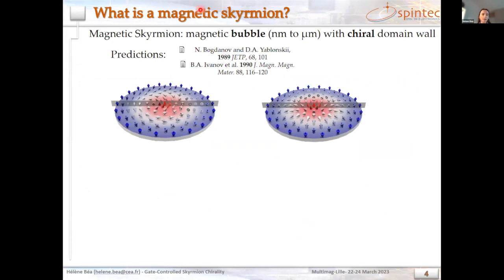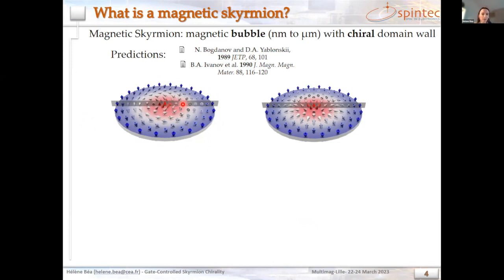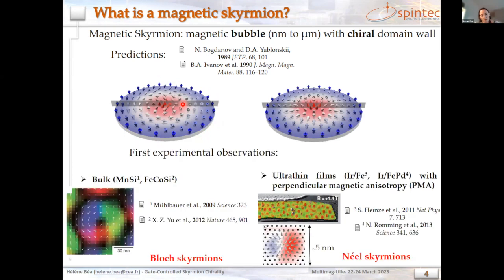So first, what is a magnetic skyrmion? A magnetic skyrmion is a specific spin texture — it's a magnetic domain which has usually a circular shape. Its size is between micrometers and can go down to nanometers. The specificity of a skyrmion is that the domain wall, which is the region surrounding the inside and outside domains, is chiral. Those skyrmions were first predicted in the 1990s by Bogdanov, Ivanov, and co-workers.